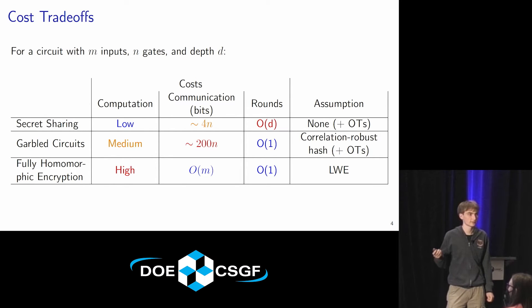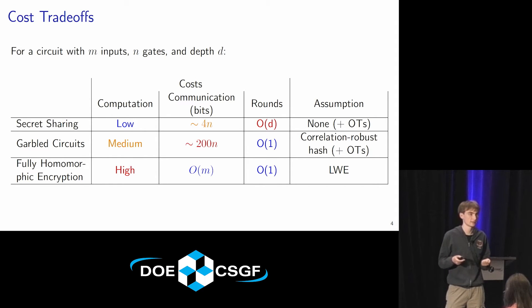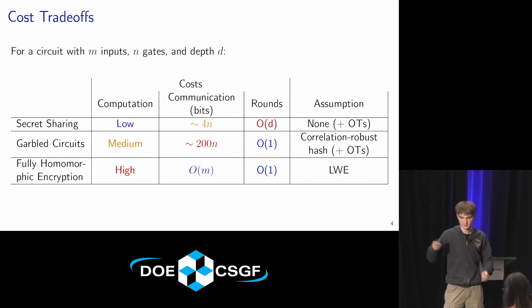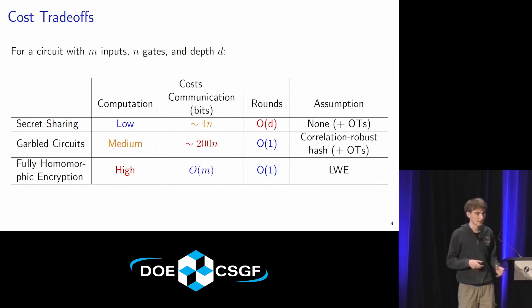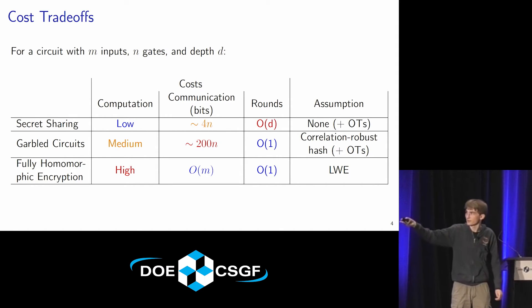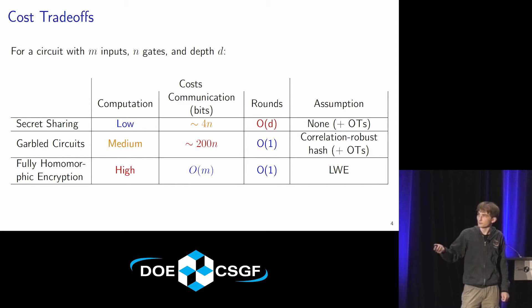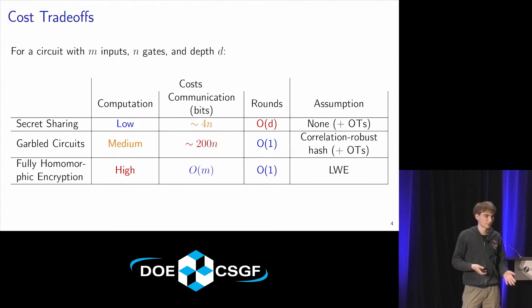There are three main techniques for secure two-party computation. What they all have in common is they divide the function into individual gates in a circuit, encrypt all the inputs, and perform cryptographic operations on each gate to turn encrypted inputs into encrypted outputs, eventually getting the encrypted output of the final circuit. Secret sharing is the cheapest in computation — only a few cycles per gate. Garbled circuits are about an order of magnitude higher, and fully homomorphic encryption is several orders of magnitude more expensive than that.